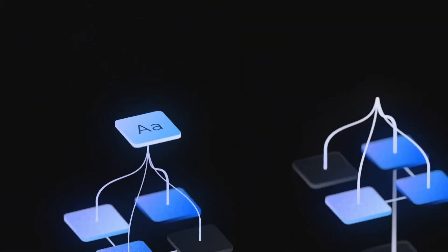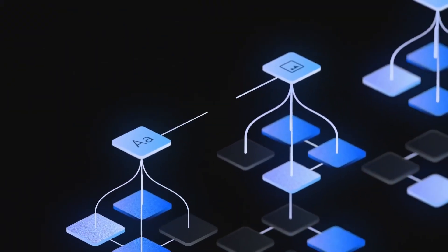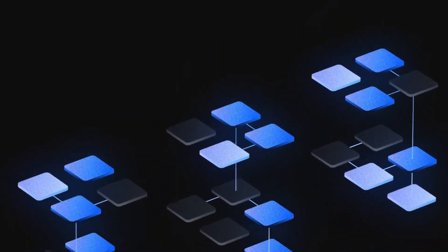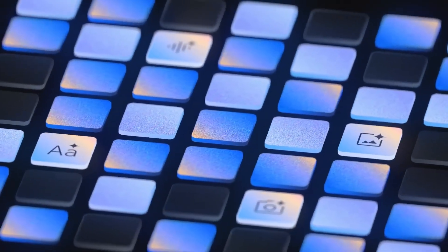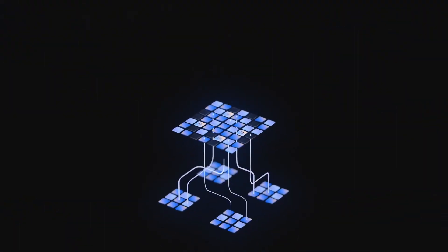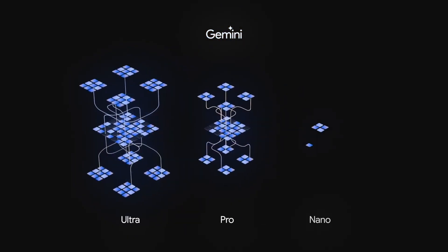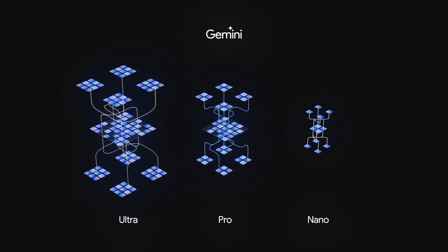So if you have any input — an image, a video, a text, or a voice — you can use all of them and get an output. There are three versions of Gemini: Gemini Ultra, Gemini Pro, and Gemini Nano. The difference between them is their analytical ability and way of responding. The highest model is Gemini Ultra.